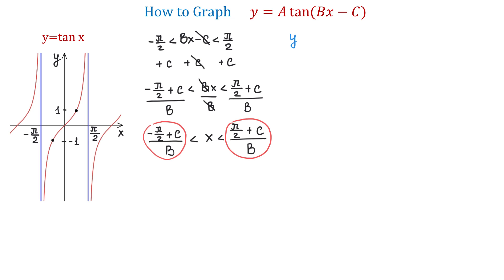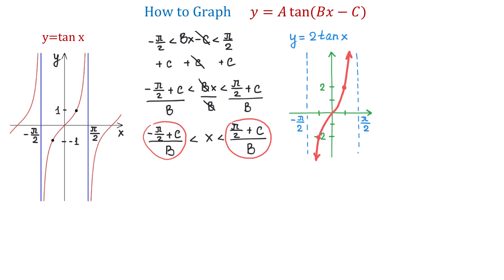For example, let's say we have the function y equals 2 tangent of x. The vertical asymptotes are still at negative pi over 2 and positive pi over 2, because at these values the tangent is undefined. However, because of the 2 in front of the tangent, when we move from the x-intercept halfway to the right the value of the function is positive 2, and when we move halfway to the left the value of the function is negative 2.